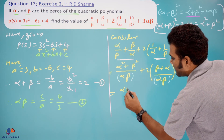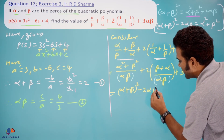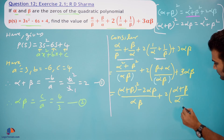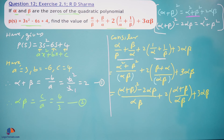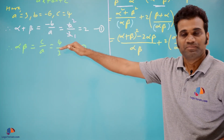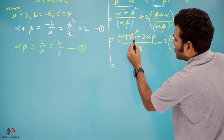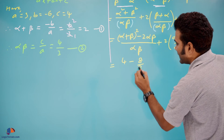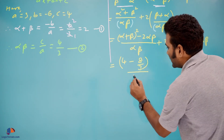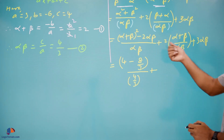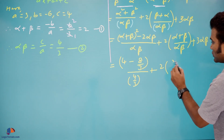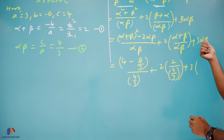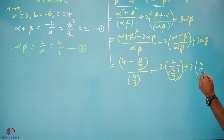The expression becomes: [(alpha + beta)² − 2(alpha × beta)] / (alpha × beta) + 2(alpha + beta)/(alpha × beta) + 3(alpha × beta). Now substituting equation (1) and (2): alpha + beta = 2, alpha × beta = 4/3. So numerator of the first fraction: (2)² − 2(4/3) = 4 − 8/3 = (12 − 8)/3 = 4/3. The expression is now (4/3)/(4/3) + 2(2)/(4/3) + 3(4/3).